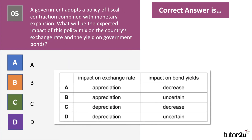Three questions left. A government adopts a policy of fiscal contraction combined with monetary expansion. What will be the expected impact of this policy mix on the country's exchange rate and the yield on government bonds? This is a tough one, so take a moment to think through the answer — press the pause button if you want — and then we'll go through it.